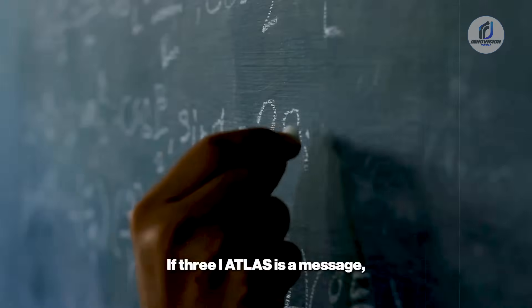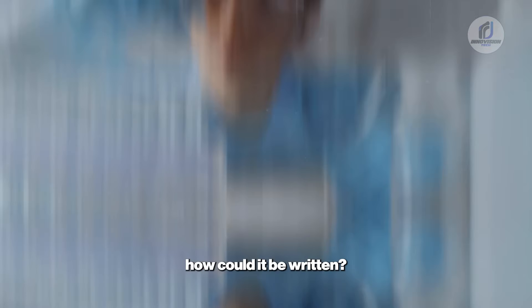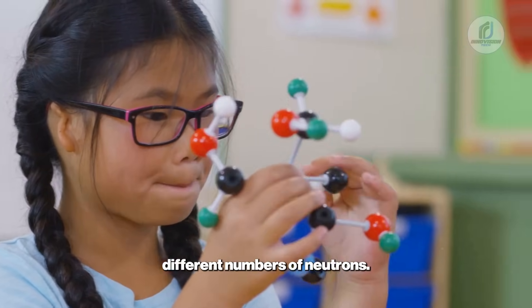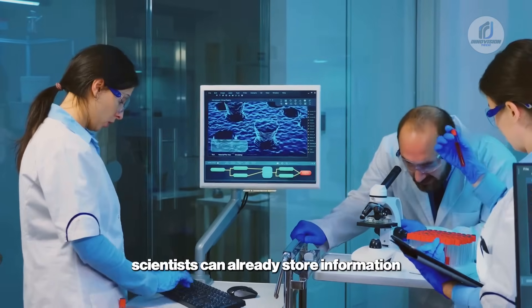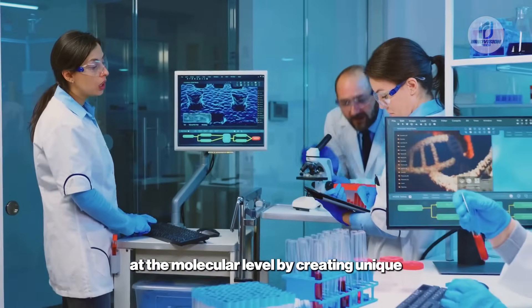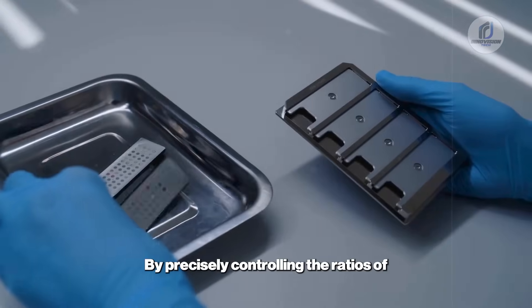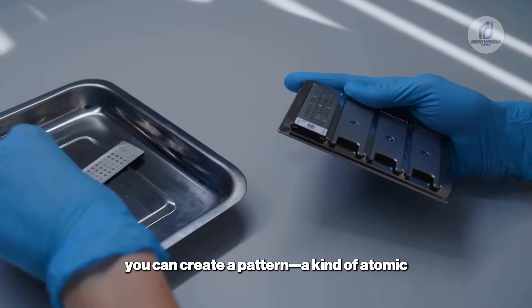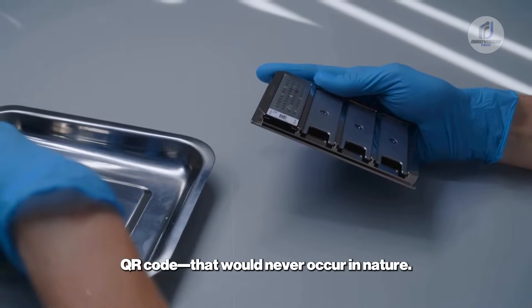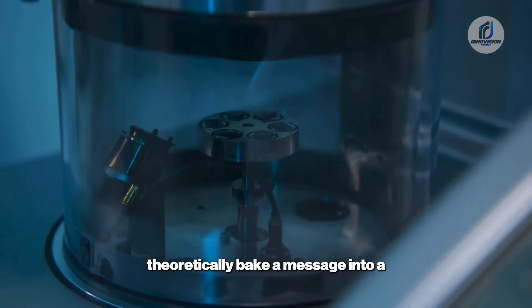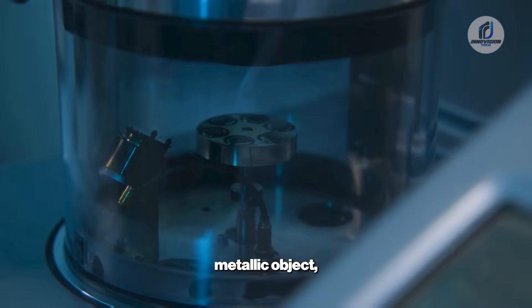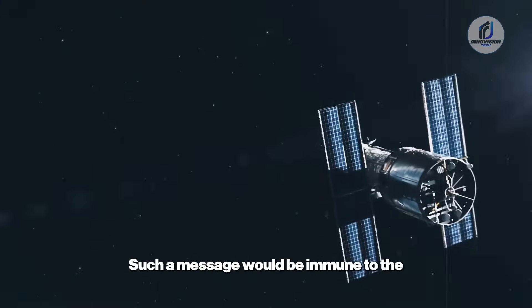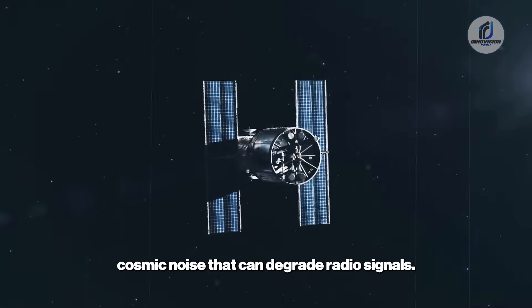Atomic messages. If 3I Atlas is a message, how could it be written? The answer might lie in isotopic encoding. Isotopes are versions of an element with different numbers of neutrons. On Earth, scientists can already store information at the molecular level by creating unique isotopic fingerprints. By precisely controlling the ratios of different isotopes in a material, you can create a pattern, a kind of atomic QR code that would never occur in nature. An advanced civilization could theoretically bake a message into a metallic object, making it durable enough to survive a journey of millions of years through interstellar space. Such a message would be immune to the cosmic noise that can degrade radio signals. The information would be in the fine print of the object's chemistry.